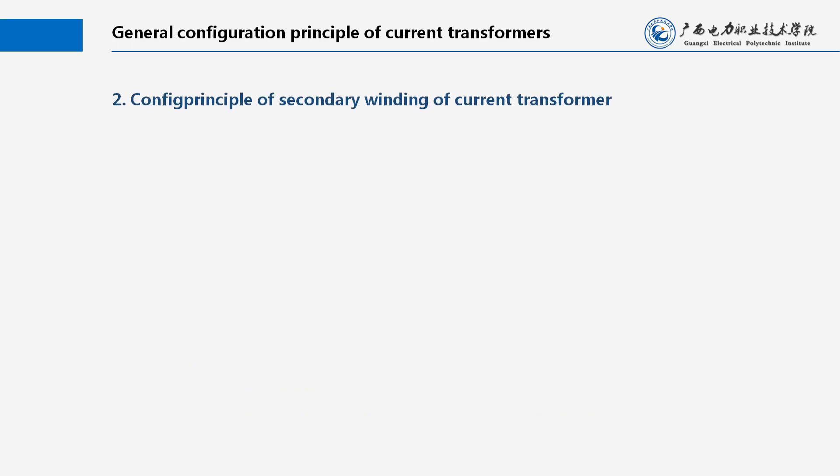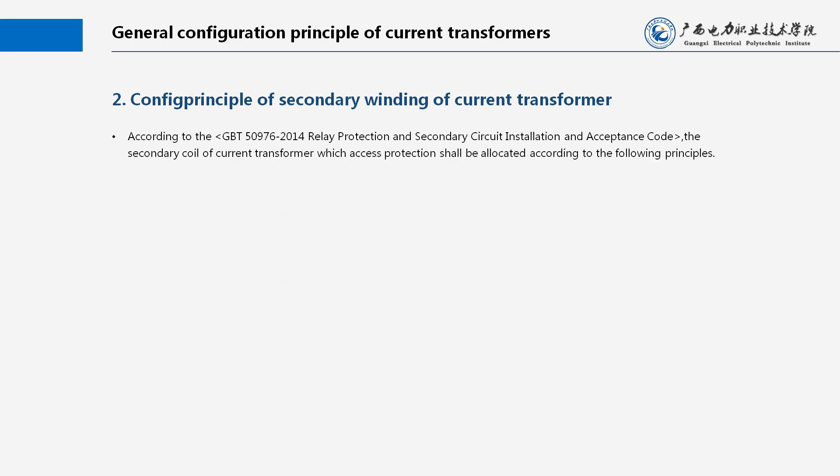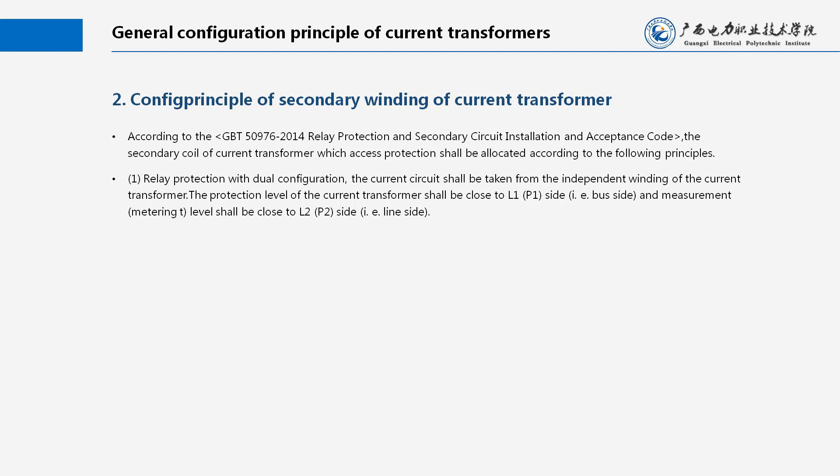Configuration Principle of Secondary Winding of Current Transformer: According to the GBT-50976-2014 Relay Protection and Secondary Circuit Installation and Acceptance Code, the secondary coil of the current transformer which accesses protection shall be allocated according to the following principles. 1. Relay protection with dual configuration: the current circuit shall be taken from the independent winding of the current transformer. The protection level of the current transformer shall be close to the L1, P1 side (i.e. bus side), and measurement and metering level shall be close to the L2, P2 side (i.e. line side).